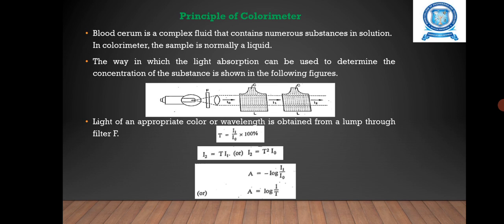Light of an appropriate color or wavelength is obtained from a lamp through the filter F. The light is absorbed in the solution, leaving the cavity with a lower intensity I1. The relation of I0 and I1 gives the transmittance T1: T = (I1/I0) × 100%. In the second cavity with the same solution, the light intensity I2 behind the second cavity is I2 = T² × I0, or I2 = T × I1.